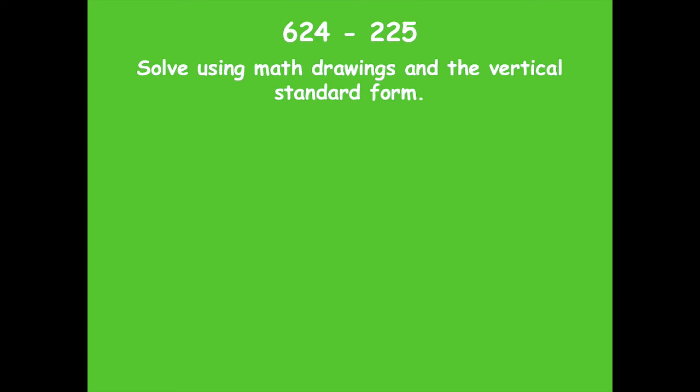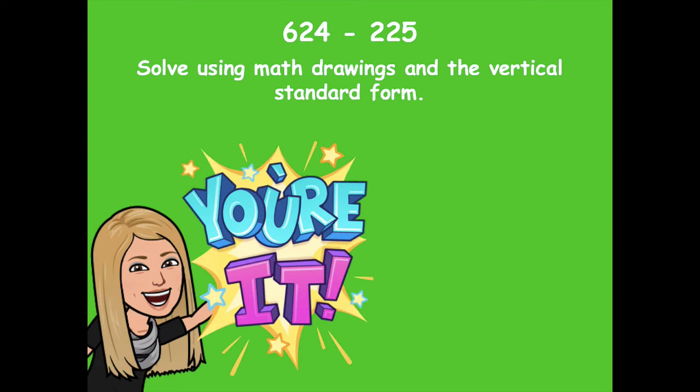Let's look at another one to practice. And this one you guys are going to do on your own, so make sure you have your dry erase board. 624 minus 225. You're going to solve using math drawings and the vertical standard form. Pause the video, go ahead and do your awesome work, rock it with your subtraction, and then click play when you're ready to go over it together.